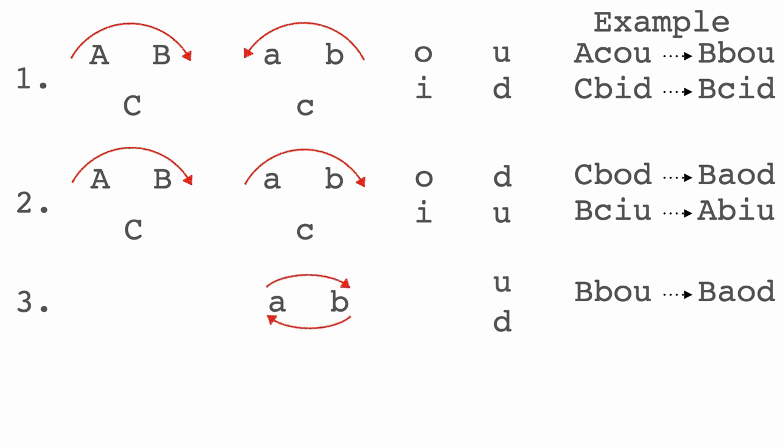Essentially you can switch arms a and b, and the up/down direction also switches. This is irrespective of whether you are looking inward or outward, and it's also irrespective of the chamber. The reason we can switch between a and b in this way is because this groove sits on arm c.